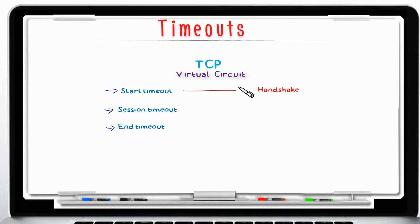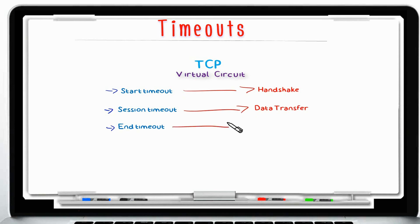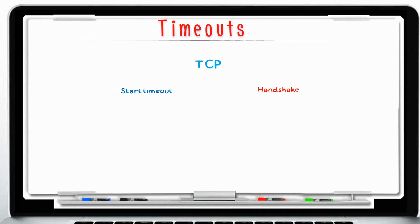The TCP start timeout corresponds to the handshake phase. The TCP session timeout refers to the data transfer phase. And the TCP end timeout corresponds to the teardown phase. Let's go through each of these three timeout values to see how they help mitigate against attacks.